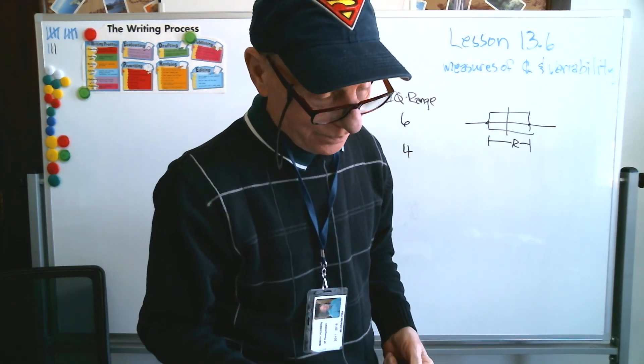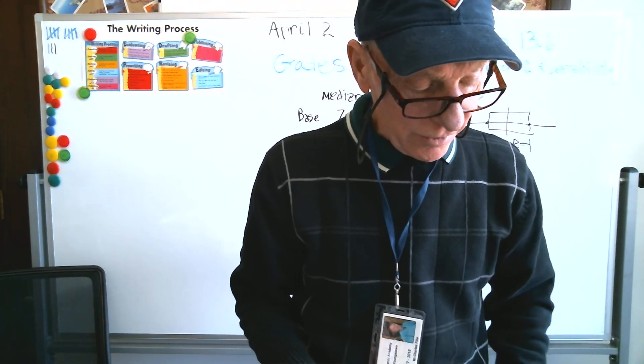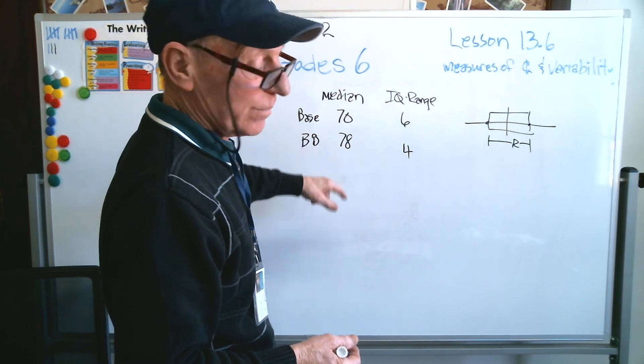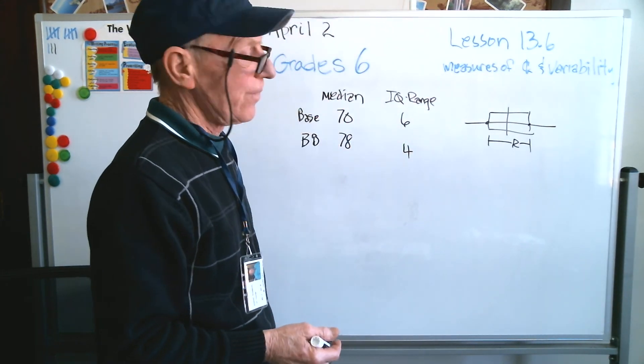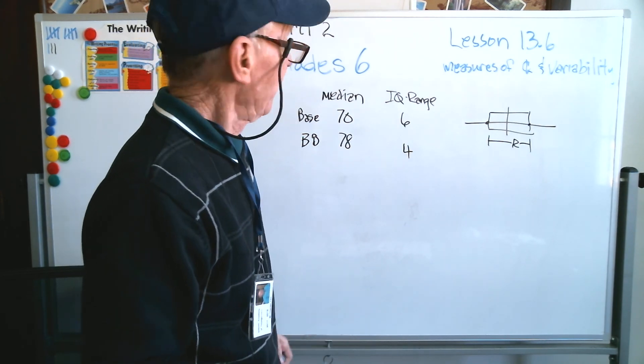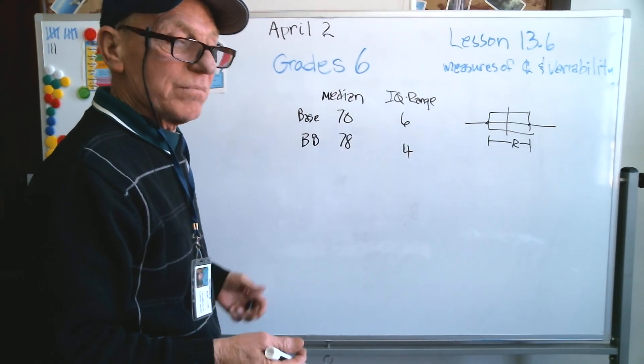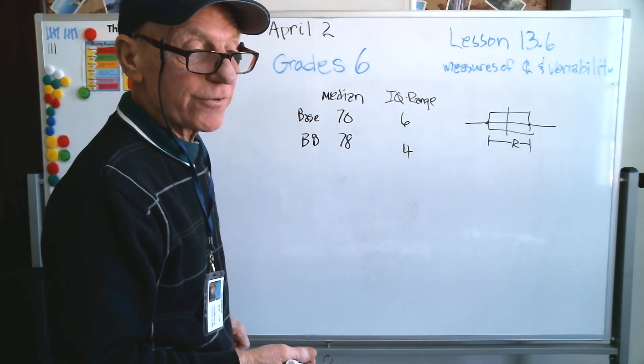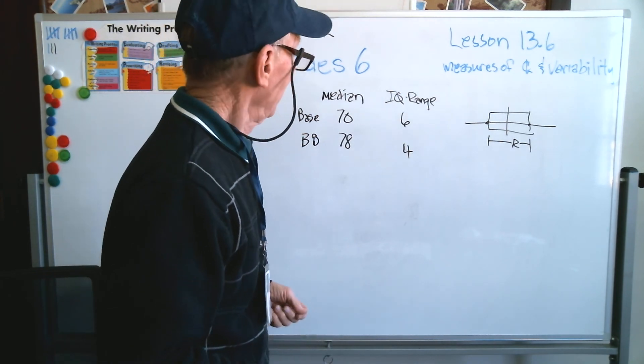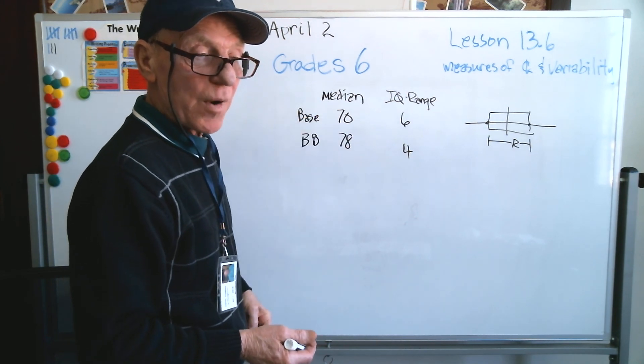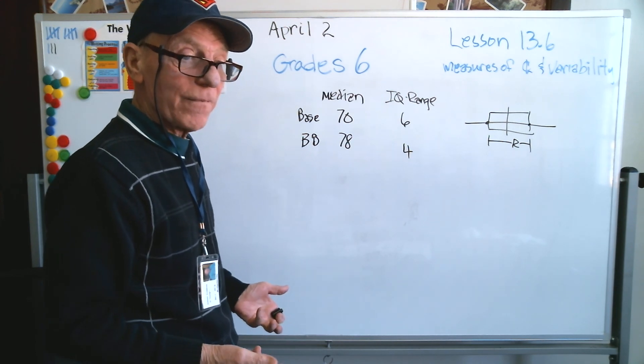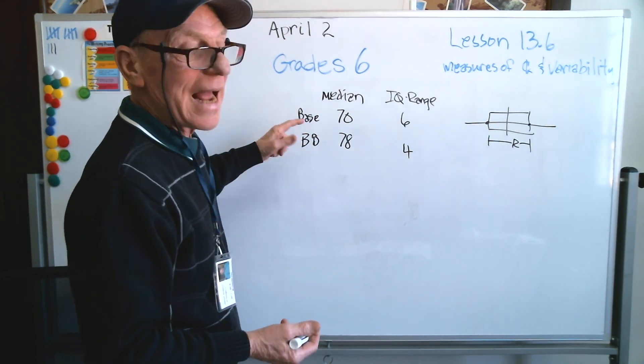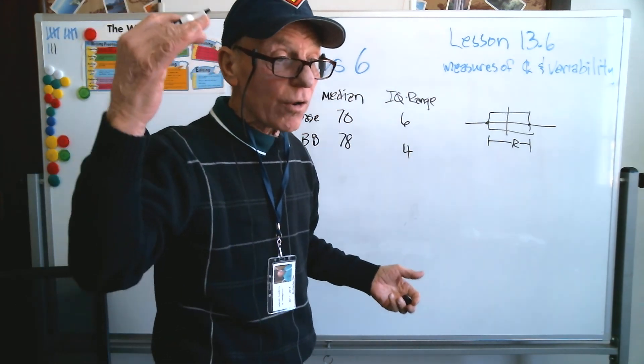The median of the baseball players' height is 8 inches less than the basketball players. When you look at that, you can pretty much infer that basketball players by and large are typically taller than baseball players. But don't get misled because there could be a baseball player who happens to be a tall baseball player, so it doesn't necessarily mean all basketball players are taller—it just means on average basketball players are typically taller than baseball players.